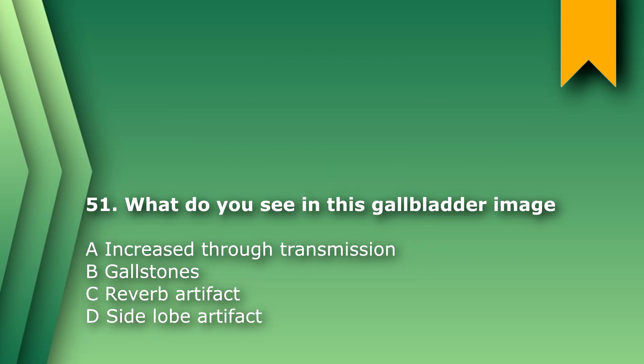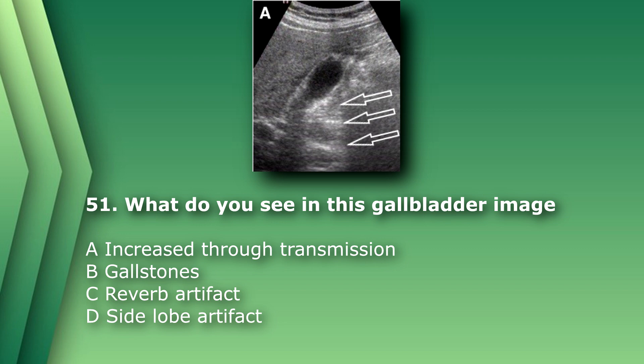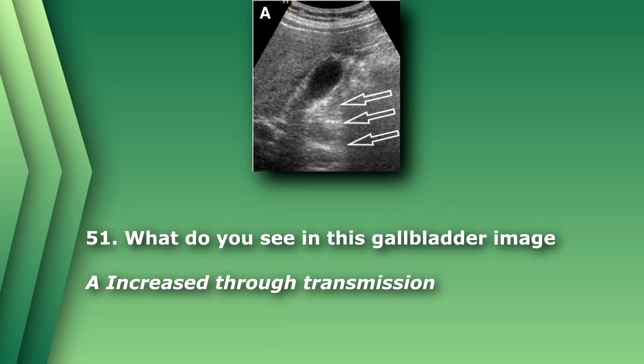Question 51: What do you see in this gallbladder image? A) increased through transmission, B) gallstones, C) reverberation artifact, D) side lobe artifact. The answer is A, increased through transmission.